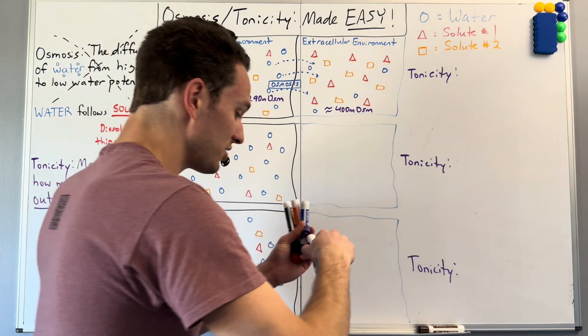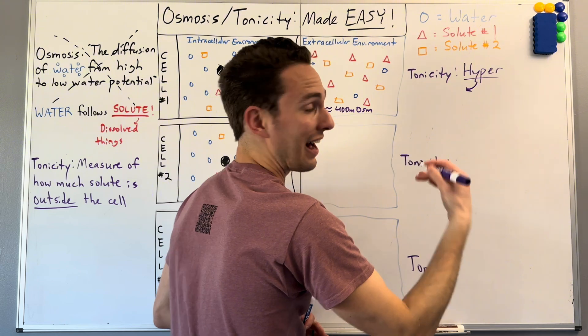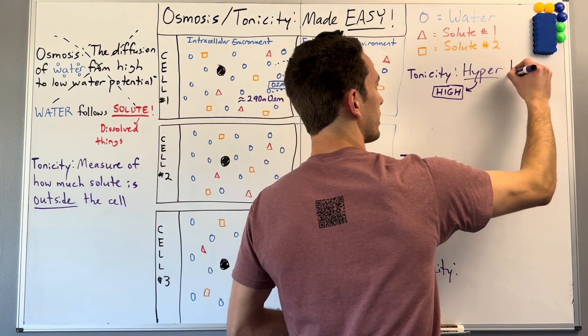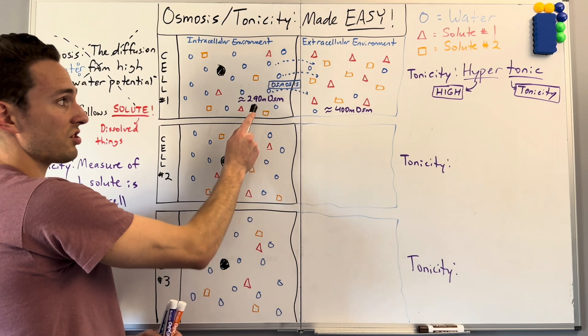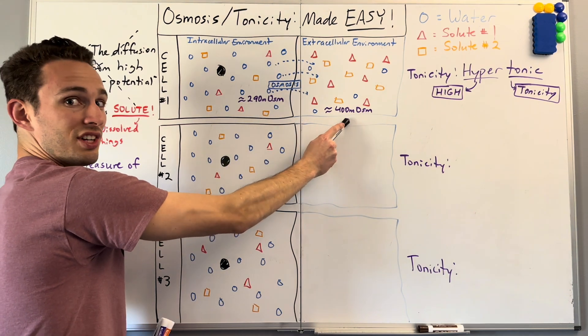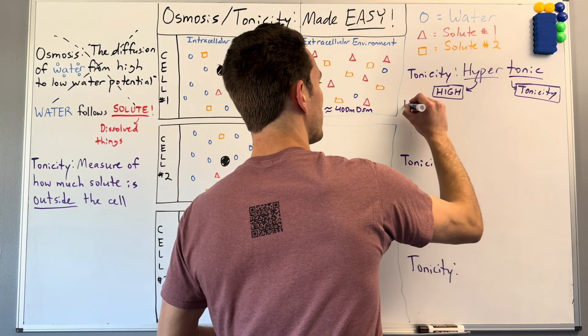So we call the tonicity of this hyper, meaning very high, tonic, meaning tonicity. So whenever the cell is bathed in a high tonicity environment, what does water do? Obviously, water moves out of the cell.